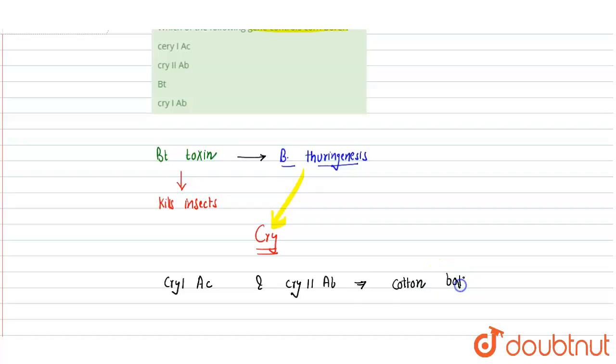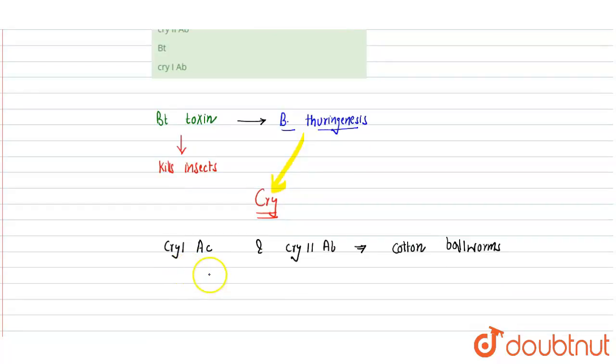They control different insects belonging to the cotton bollworm family and also control corn borers. These are different kinds of cry genes isolated from Bacillus thuringiensis, but all these cry genes have in common that they release the BT toxin, which is an endotoxin that kills insects or other pests.